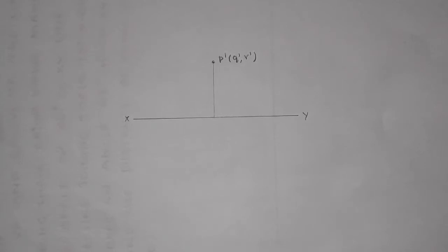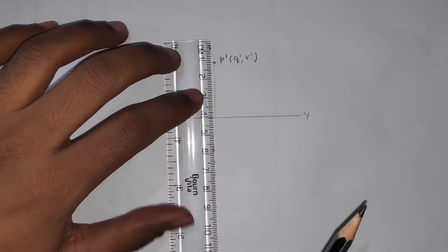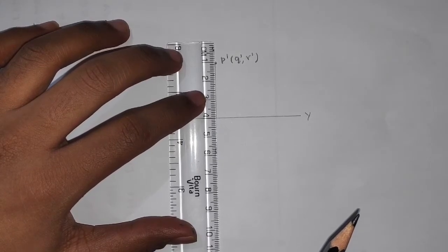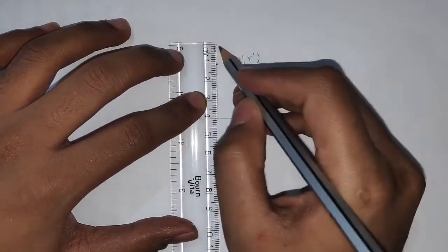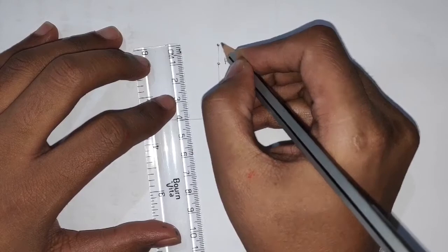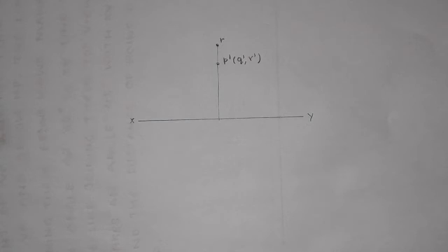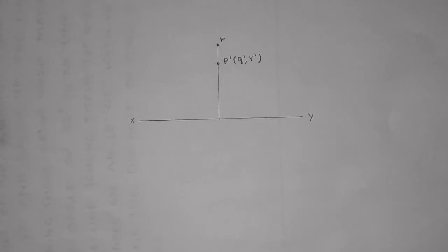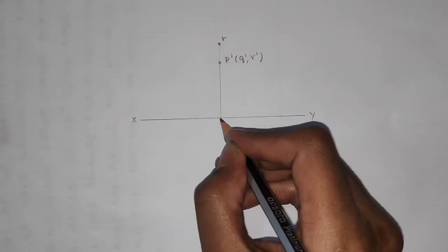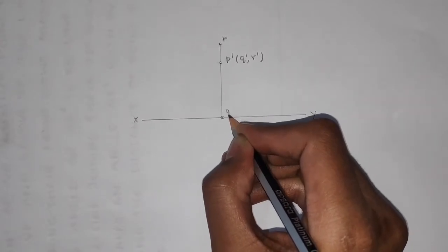Next, the top view of R is 40 mm above the XY line. Locating this 40 mm at the 0 mm line, I draw the projection line — this will be the top view of point R, written as R. Next, point Q lies on VP. If any point lies on VP, its top view lies on the XY line. So point Q's top view will be marked on the XY line, written as Q.